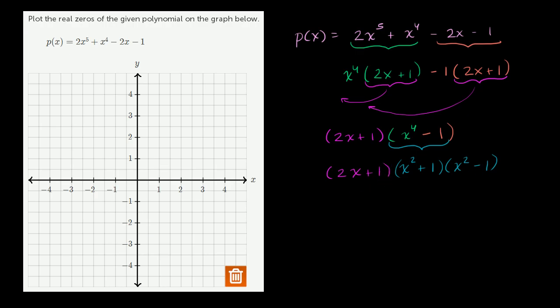And once again, we have another difference of squares right over here. That's the same thing as x plus 1 times x minus 1. And let me just write all the other parts: x squared plus 1 and 2x plus 1. I think I factored p of x about as much as could be reasonably expected.